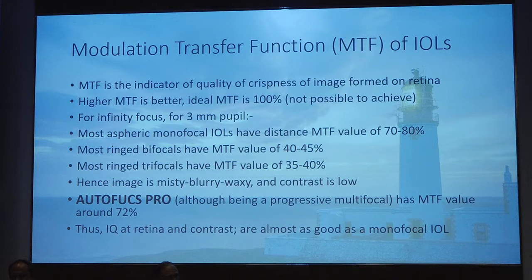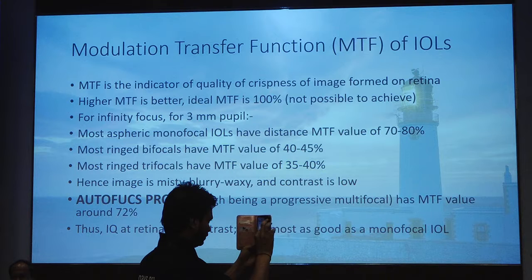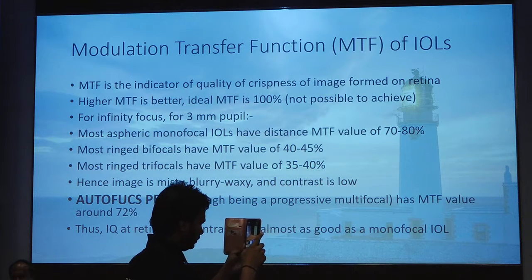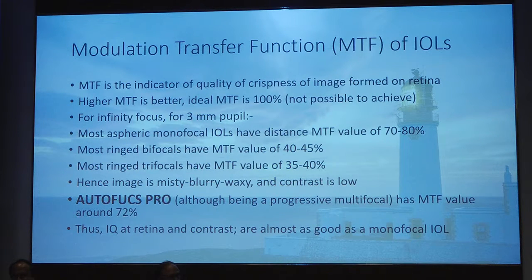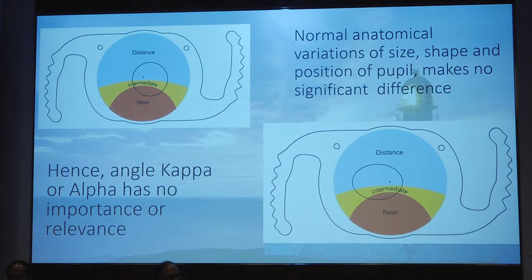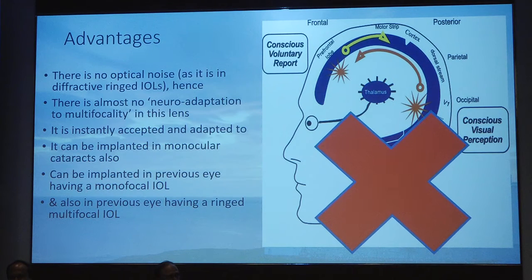Contrast sensitivity is as good as a young adolescent on the Peli-Robson chart. MTF function of Autofocus Pro is 72%, versus 80% for an aspheric monofocal and less than 45% for all multifocals — giving image quality nearly like a monofocal. Normal anatomical variations of pupil size, shape and position make no difference. Angle alpha and angle kappa are unimportant. There is no optical noise as in diffractive ringed IOLs, so it is free from the need for neuroadaptation.